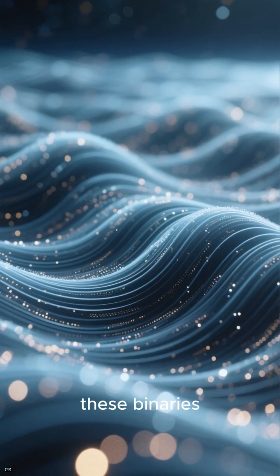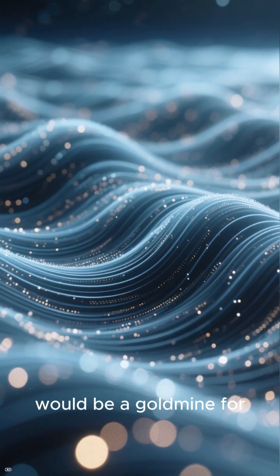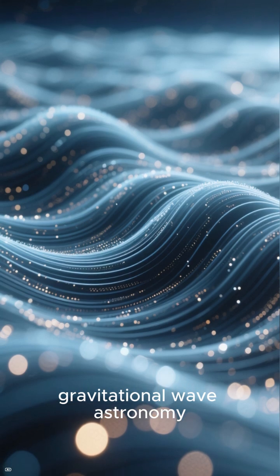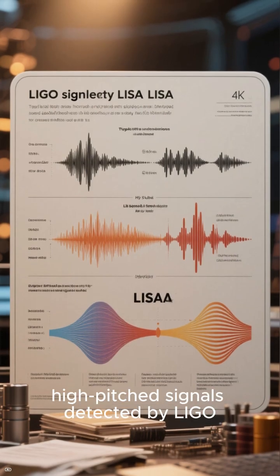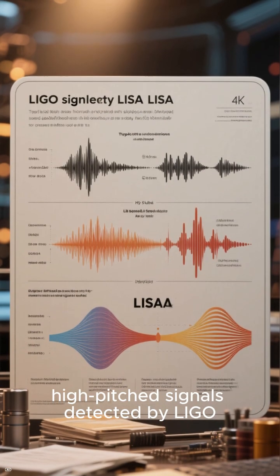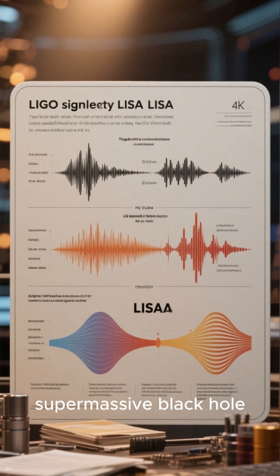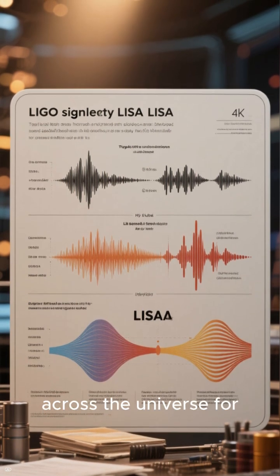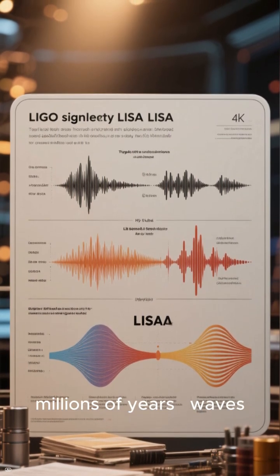If confirmed, these binaries would be a goldmine for gravitational wave astronomy. Unlike the brief, high-pitched signals detected by LIGO, supermassive black hole pairs emit slow, deep waves that ripple across the universe for millions of years, waves that future missions like LISA could detect.